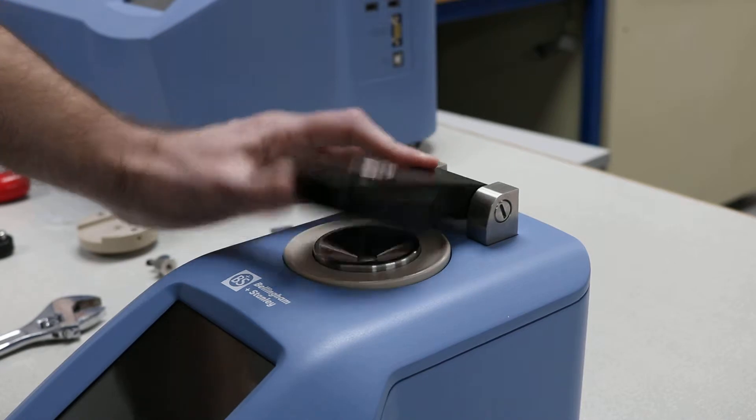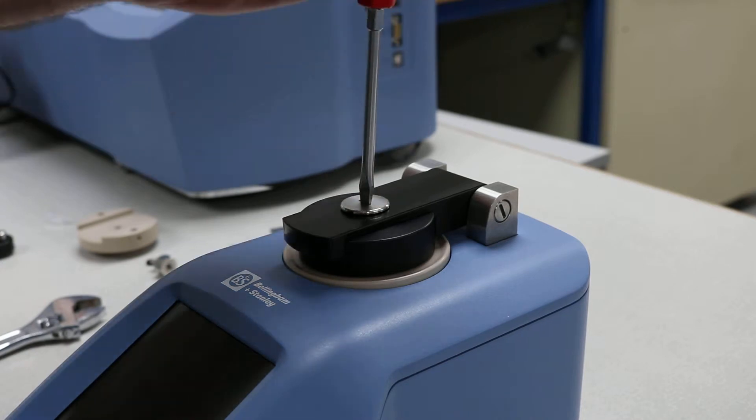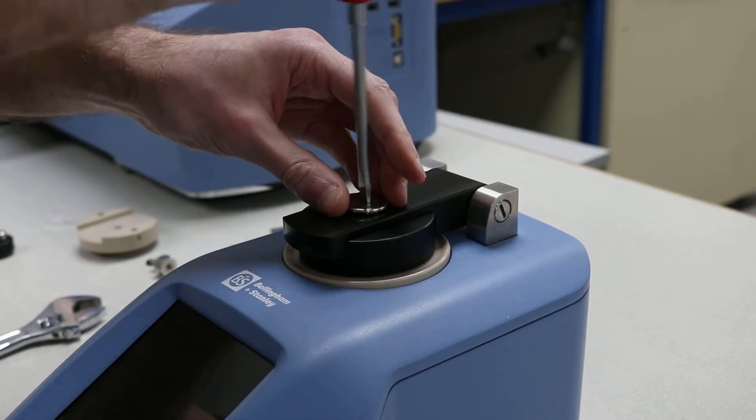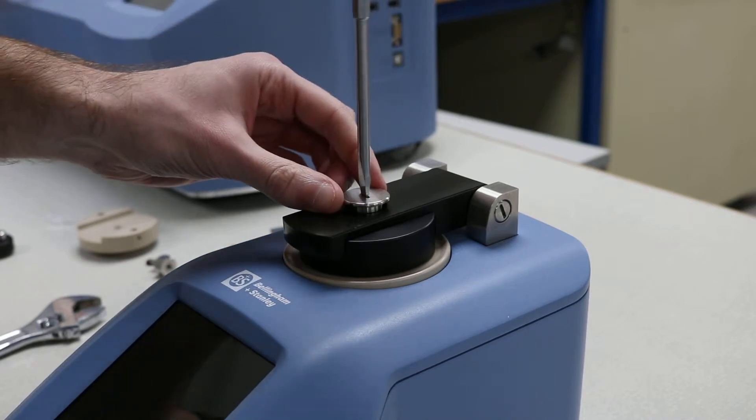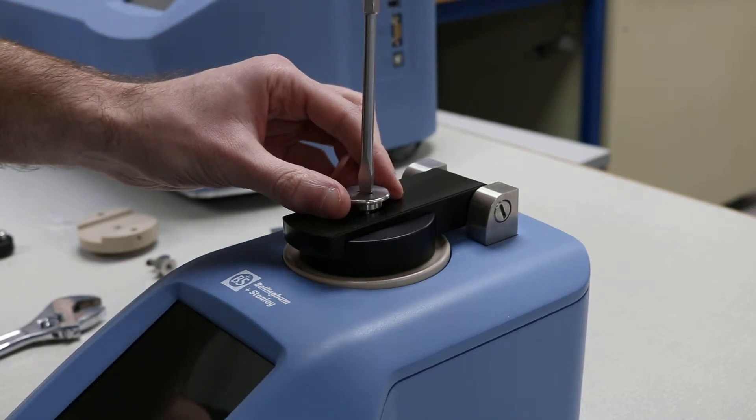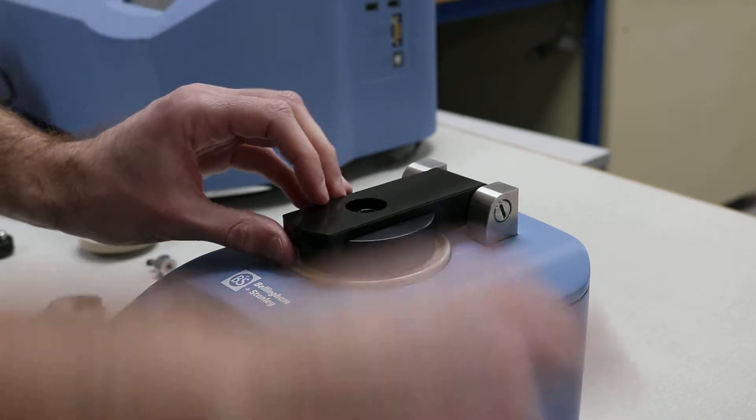It's currently fitted with the standard presser which needs to be removed first. So with a screwdriver just undo the main bolt. You can put that to the side.